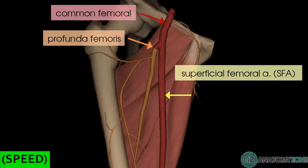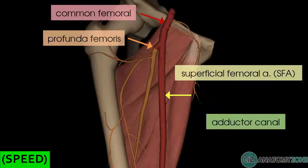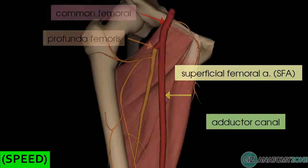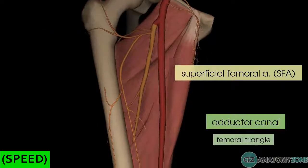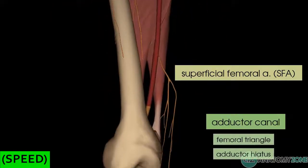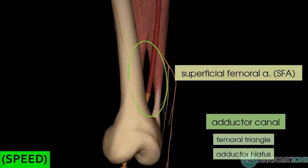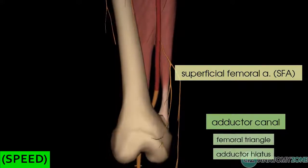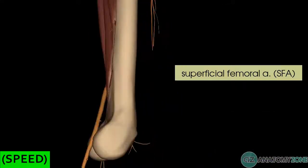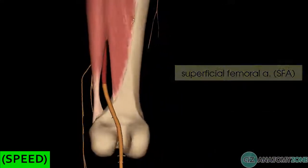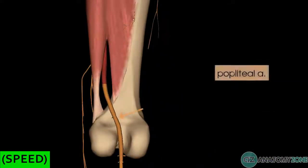The SFA travels through the adductor canal, which is a muscular tunnel in the thigh beginning at the bottom of the femoral triangle and ending at the adductor hiatus. You can see the adductor hiatus in this model here, as it's an opening in the adductor magnus muscle, and this allows the SFA to pass through into the posterior compartment of the thigh. As the SFA passes through this hiatus, it becomes known as the popliteal artery.